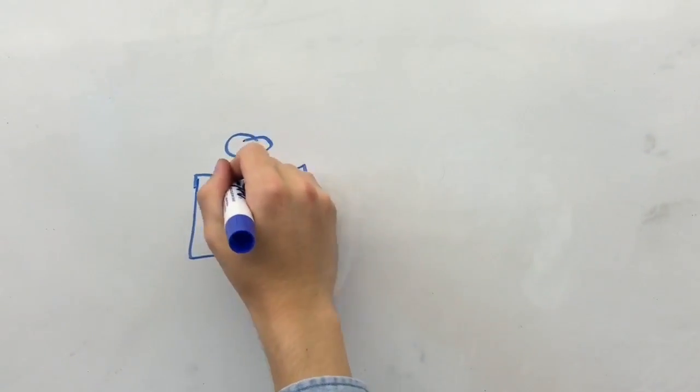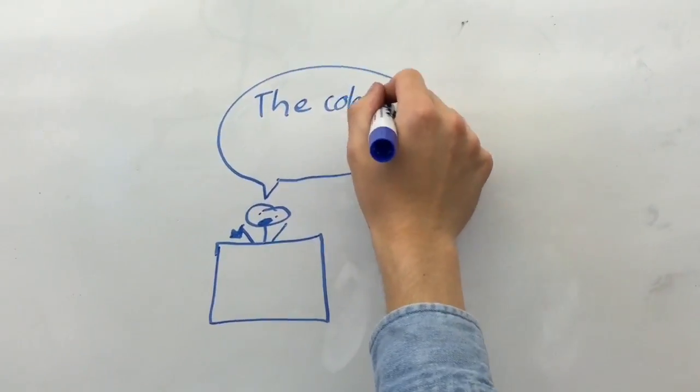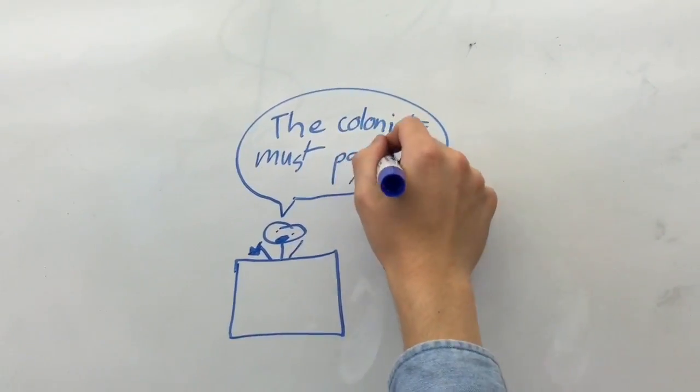The Prime Minister of Britain, Lord Grenville, decided that the colonies must pay for the war, so he imposed a Stamp Act.